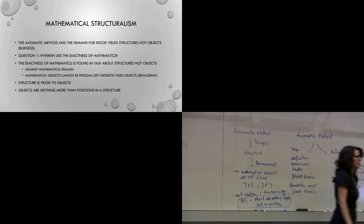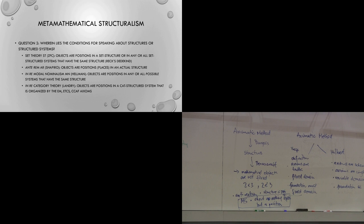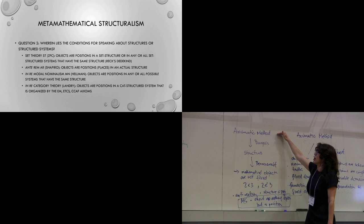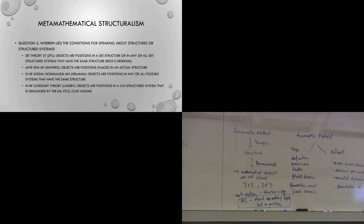Why do we get that conclusion? Because when we look at the axiomatic method, it tells us to focus on structure. When we look at the point Benacerraf is making, it says don't look for referential fixity. And so we get structure is prior to objects — whatever that means. So we've still got that the exactness of mathematics lies in the axiomatic method and the precision of its definitions, but now we've got the claim that it's structure we should be focusing on and not objects. Where lie the conditions for speaking about structures or structured systems? That becomes our next task.